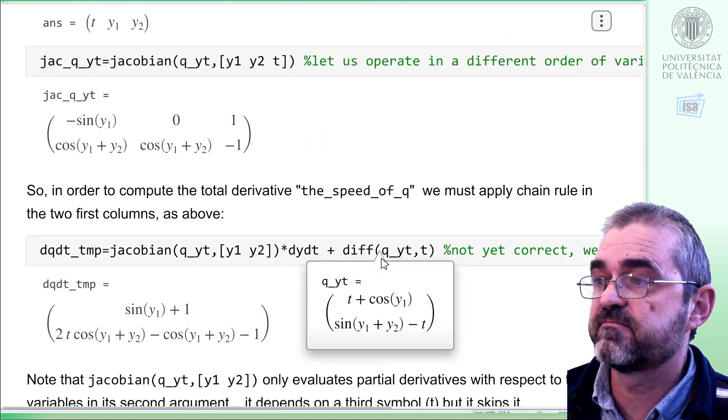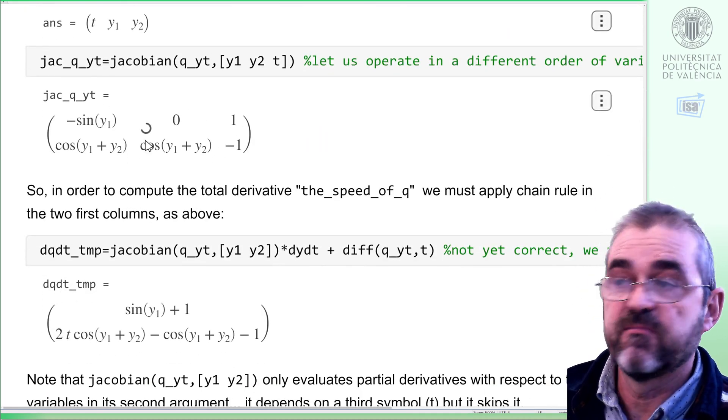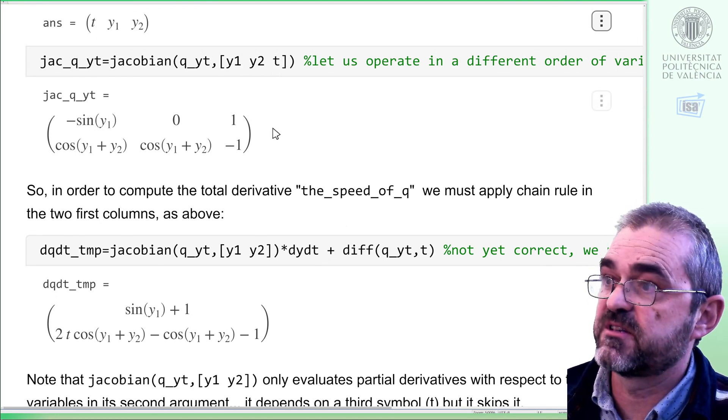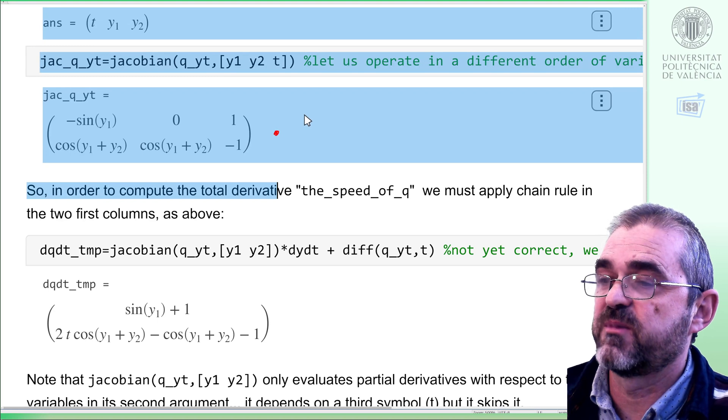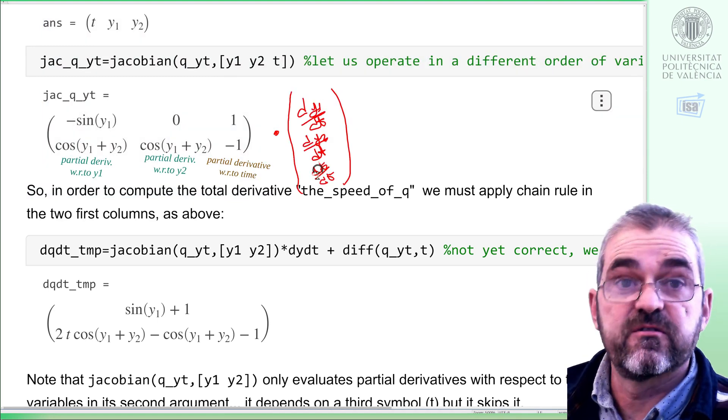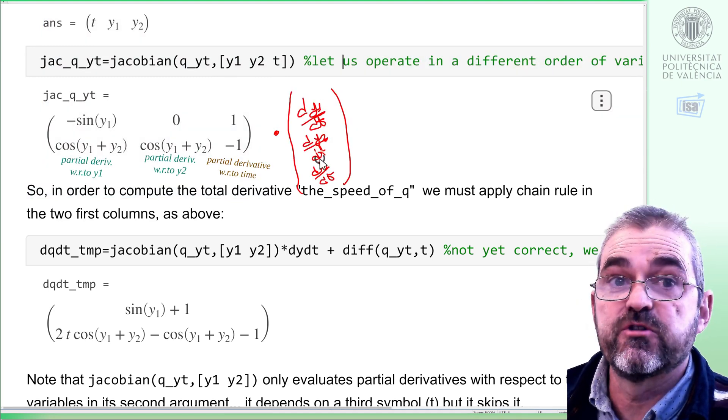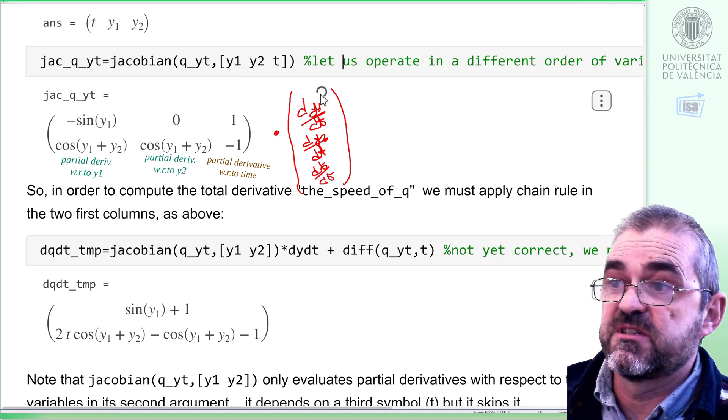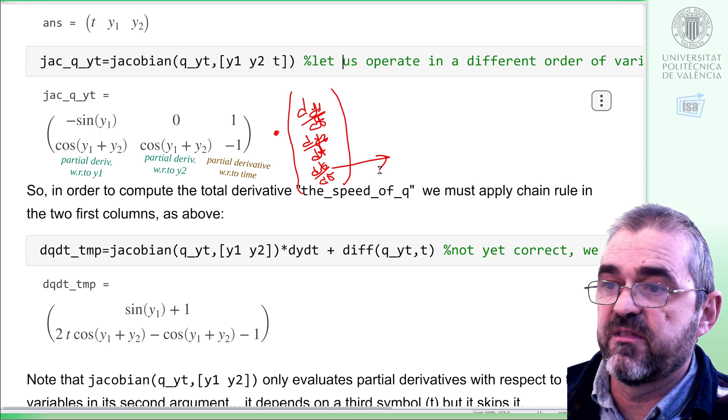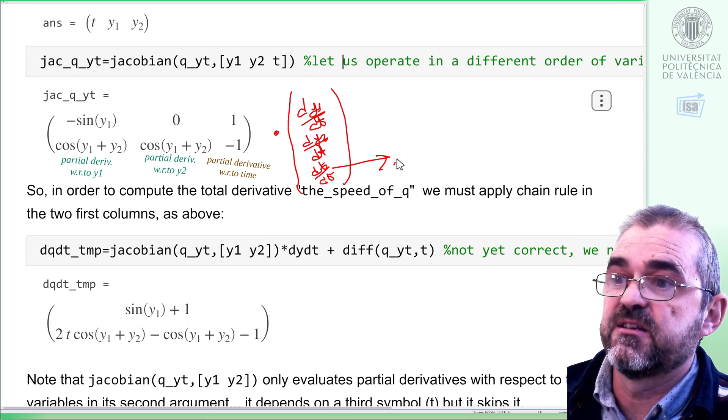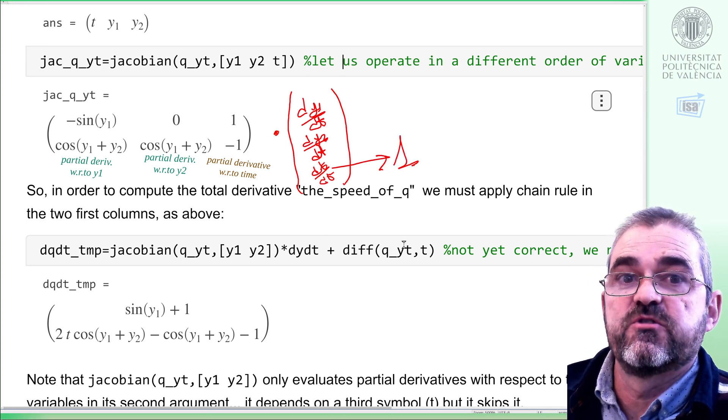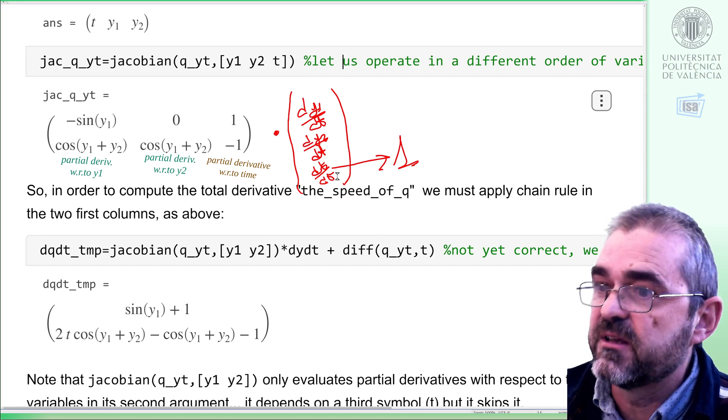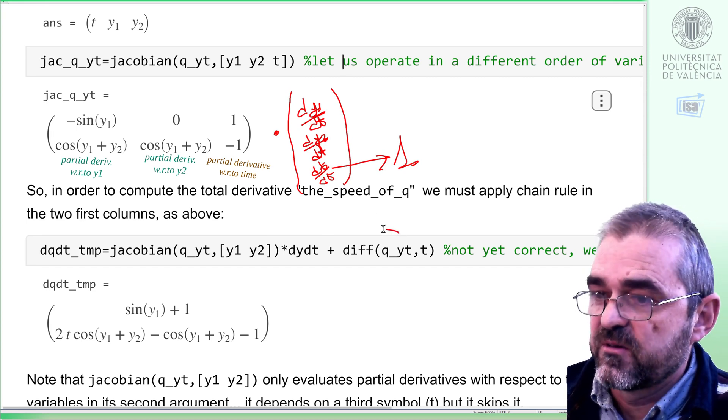So, theory tells us that multiplying the Jacobian by the time derivatives of the inputs, which is the second Jacobian, this kind, multiplied by the vector of time derivatives, I don't put partial derivatives because there is only one argument, time, so this is chain rule, but the derivative of t with respect to t is just one, so it is usually separated in formulas, it's just chain rule, but that special thing, which is this, we call it the explicit term.